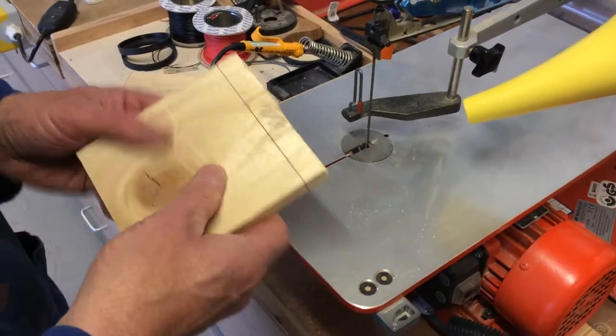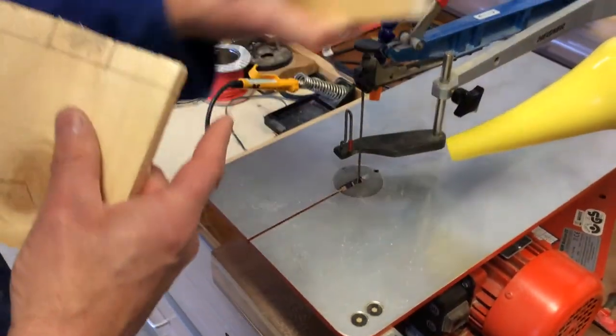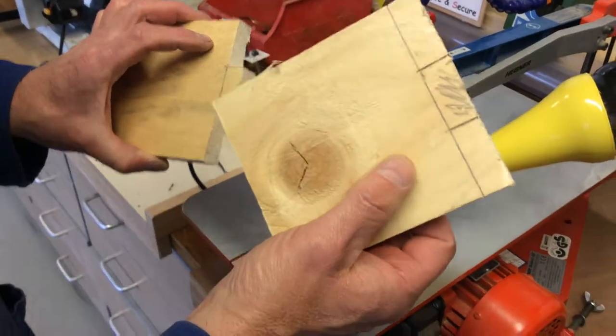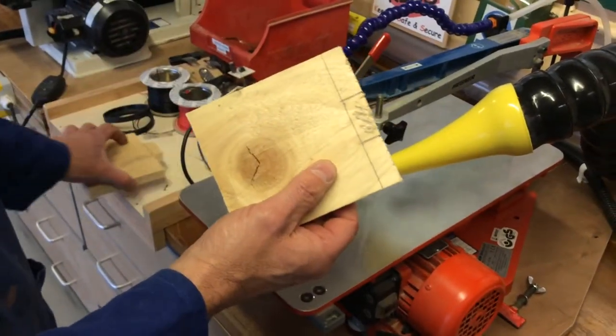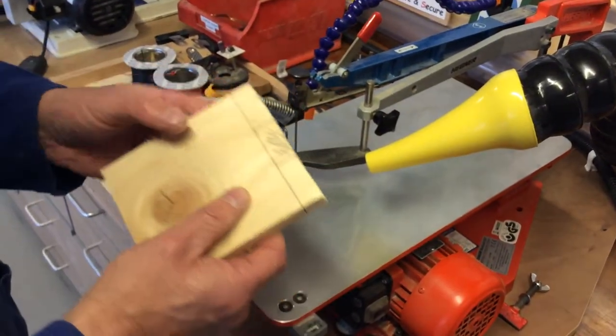Now we're going to do the second part of the finger joint. Remember that we've left the middle piece on that one, so on this one we're going to cut the middle piece out where we've marked the waist.